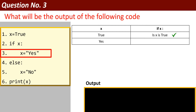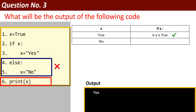Because the condition on line number 2 is true, the following if statement will be executed — that is x equal to 'yes'. But line number 4 and line number 5 will be ignored. Why? Because if the given condition is true, the else part will be ignored. So x equal to 'no' will not be executed. The value of x is 'yes', and it will print 'yes' on the output screen.